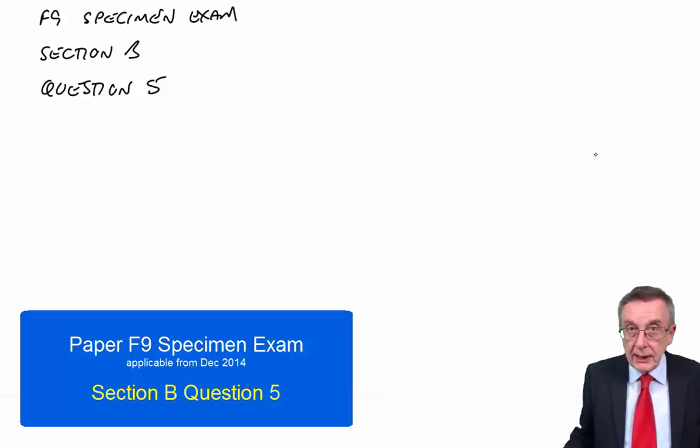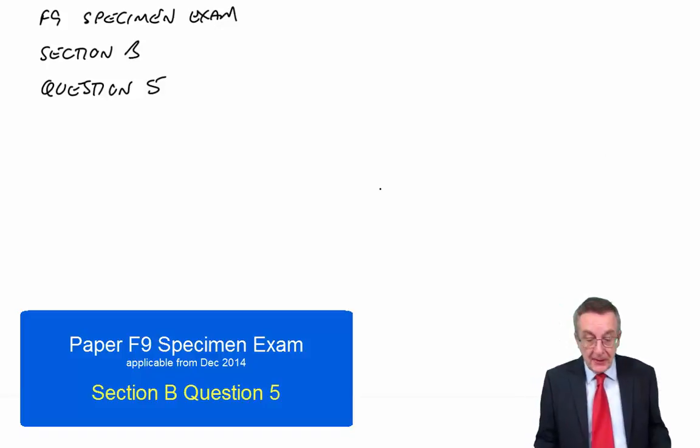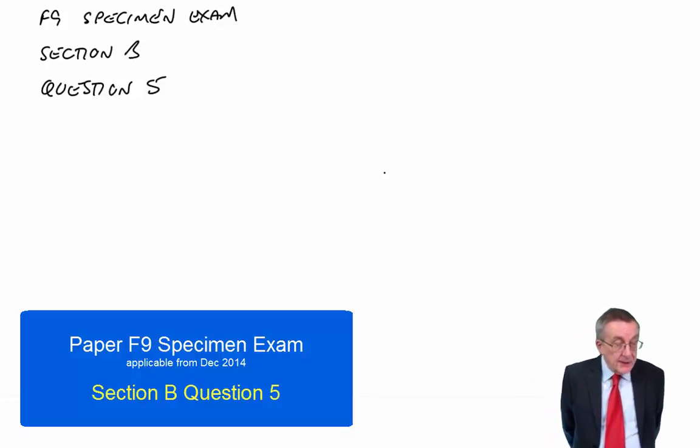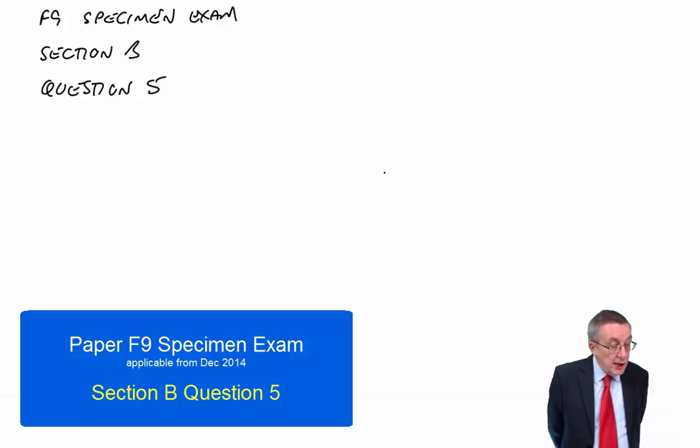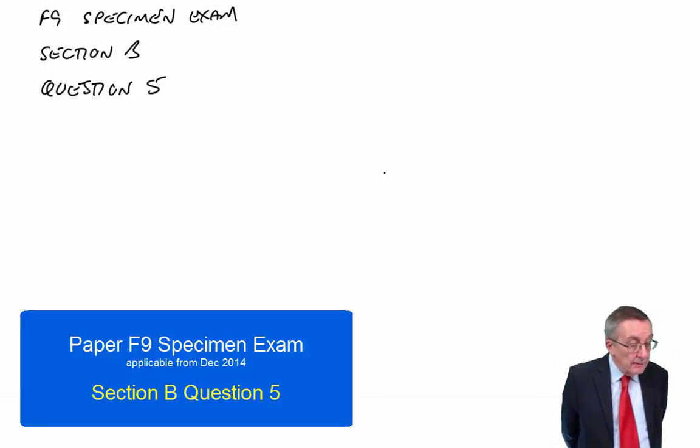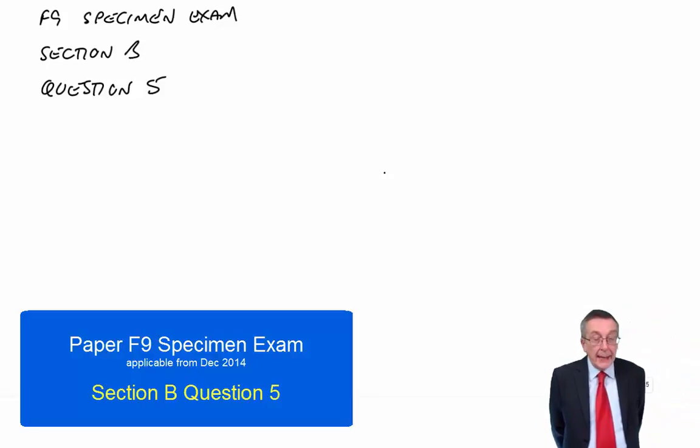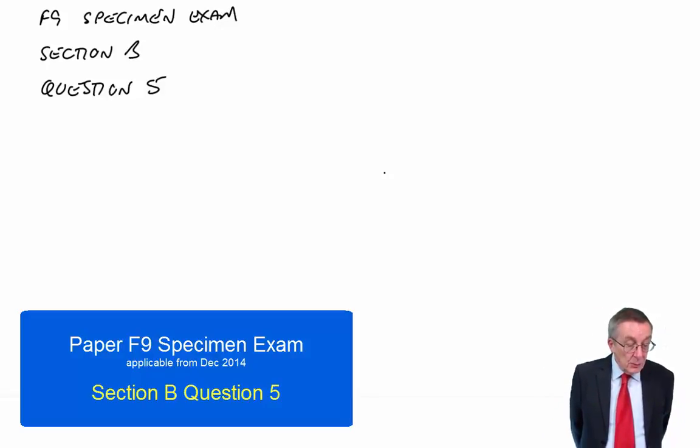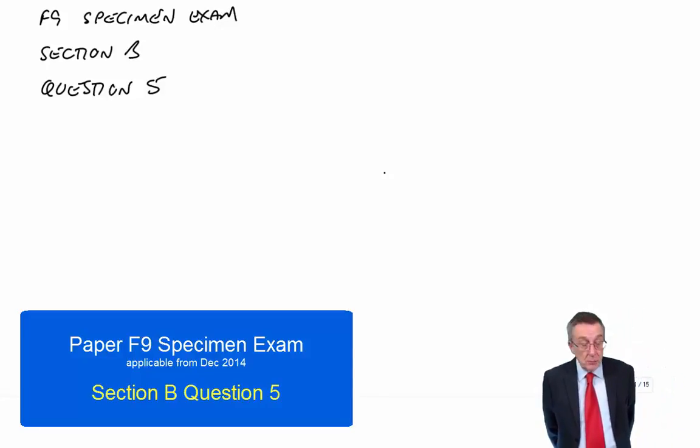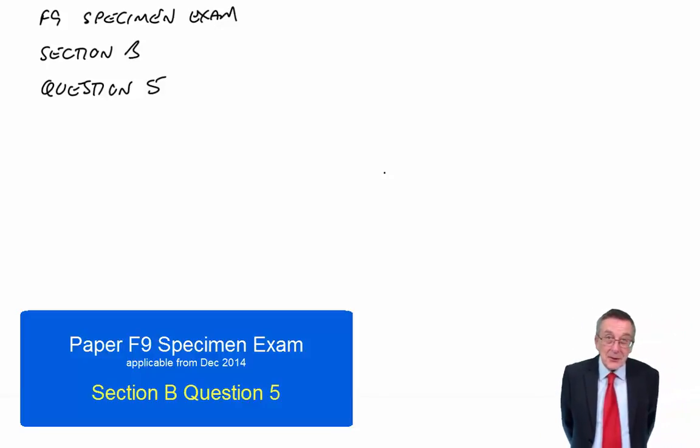Let's look at the last question in Section B of the Paper F9 Specimen Exam. Look at the requirements. It's a 15 mark question. Part A: Calculate the following values for DD Company. Number one, the ex-dividend share price using the dividend growth model, three marks. Number two, capital gearing, debt divided by debt plus equity using market values, two marks. And three, the market value weighted average cost of capital, two marks. So three, seven marks there for the calculations.